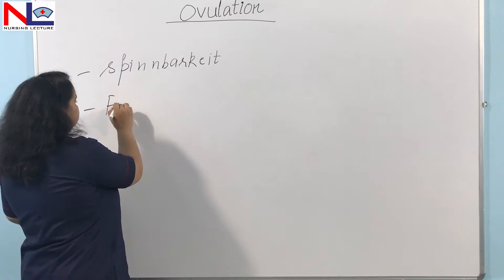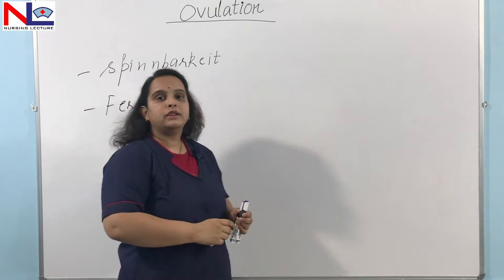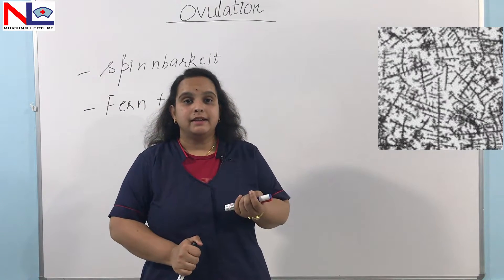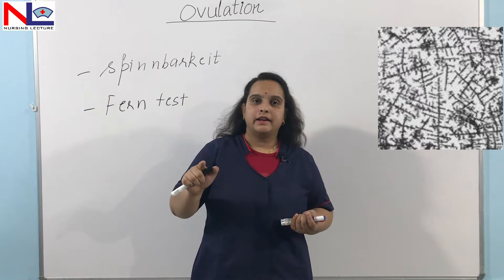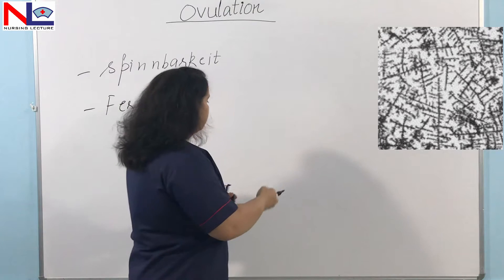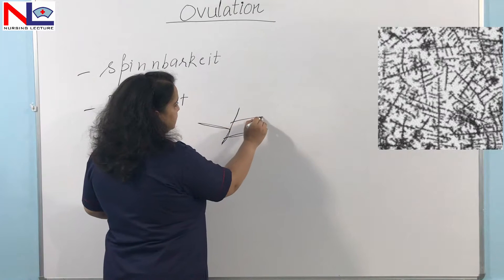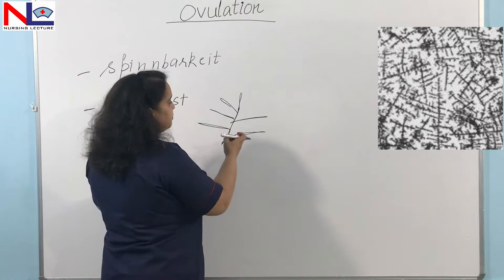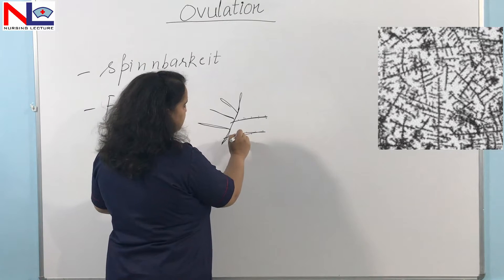The next one is the fern test. In the fern test, we'll prepare a glass slide, collect the cervical secretion from a pipette and place it on the slide, dry it, and then examine it under the microscope. We'll see there are mucous fibre strings, and on these mucous fibres there are dried particles of sodium chloride.